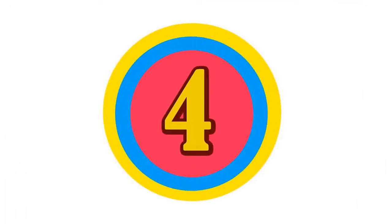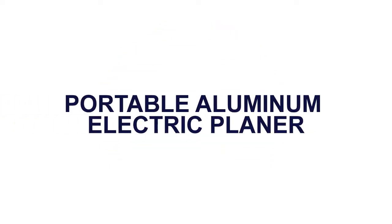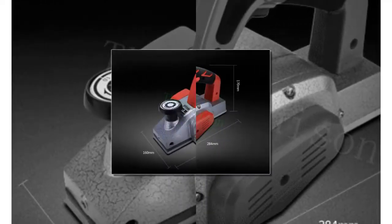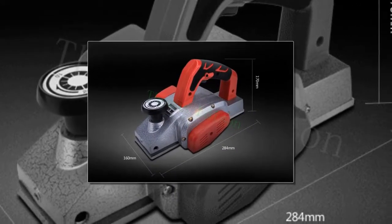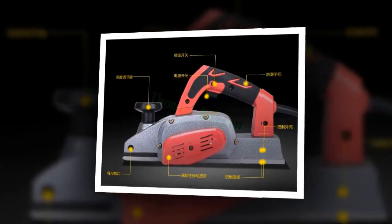Here is product number 4: Portable Aluminum Electric Planer. Material: Aluminum. Idling speed: 0 to 16,000 RPM.